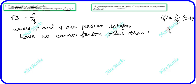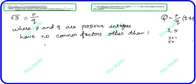For example, if you look at 3 and 5, their common factor is 1. So p and q share no common factor other than 1. That is why we say root 3 equals p by q, and we need to find what p and q are — that is, what their factors are.